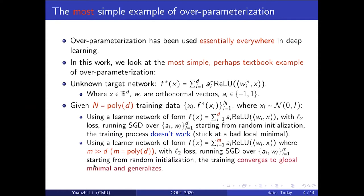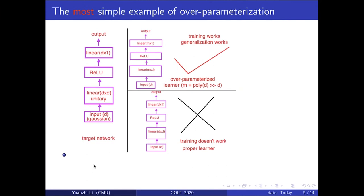On the other hand, using a learner network f(x) equal to the summation from i=1 to m of a_i * ReLU(w_i^T x), where m is much larger than d — so we have many more parameters than necessary — running stochastic gradient descent over the parameters starting from random initialization, the training does converge to the global minimum, and it actually generalizes. So with a properly parameterized learner the training doesn't work, but for an over-parameterized learner, both training and generalization actually work.